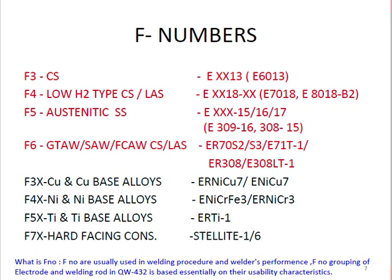F-numbers represent the grouping of electrodes and filler rods per QW-432. F3 is carbon steel (e.g., E6013); F4 is low-hydrogen carbon steel (e.g., E7018 or E8018); F5 is austenitic stainless steel (e.g., E309-16, E308-15); F6 covers GTAW, SAW, FCAW rods for carbon and low-alloy steel (e.g., ER70S, E71T-1, ER308, E308LT1). The F-number for a particular electrode can be found in the ASME SFA specifications such as SFA 5.20 or SFA 5.17.